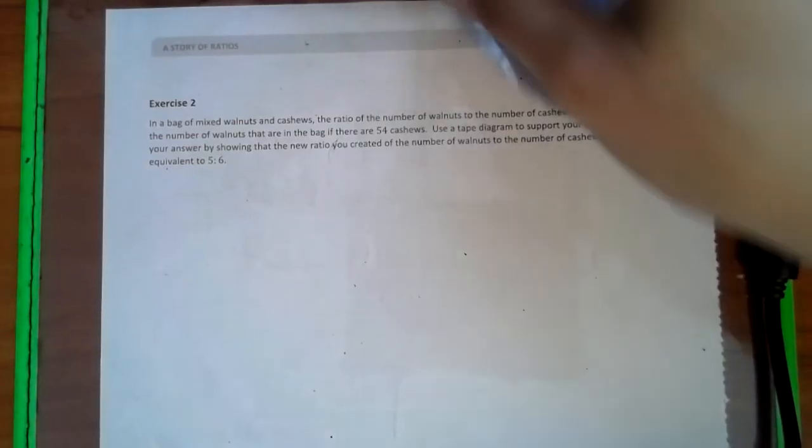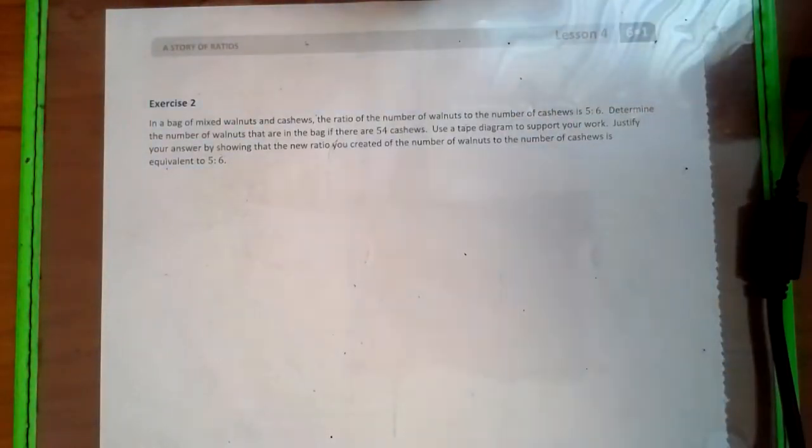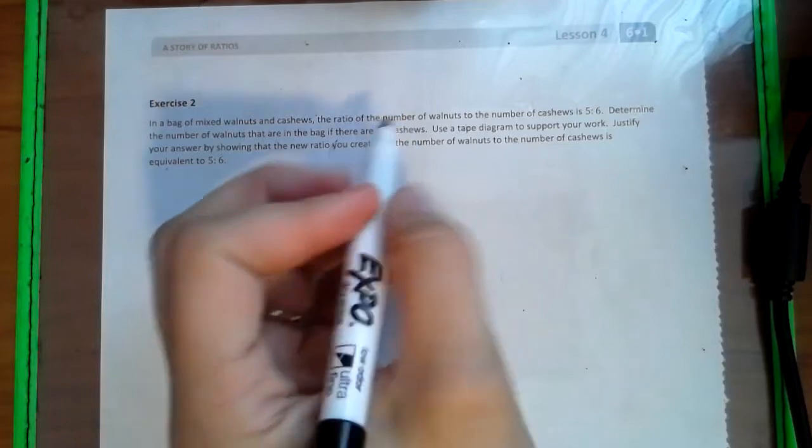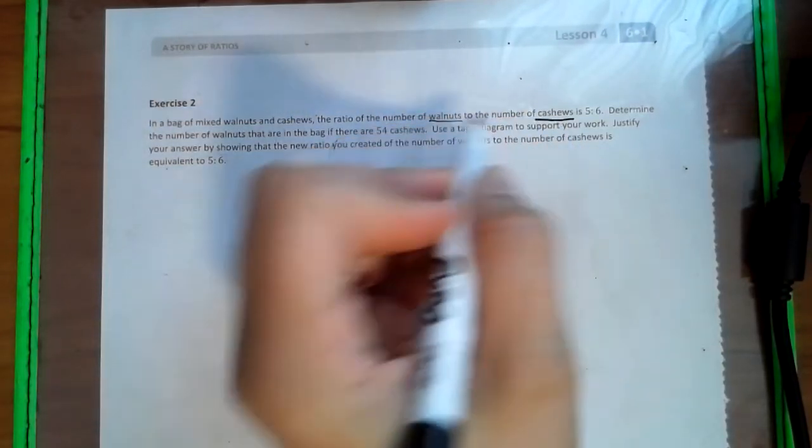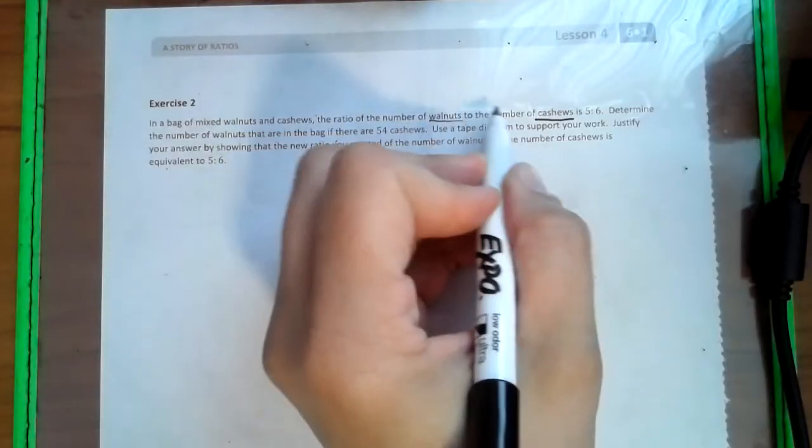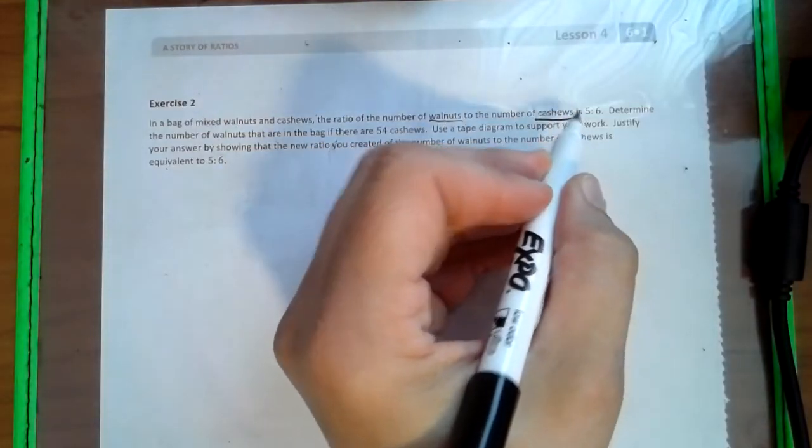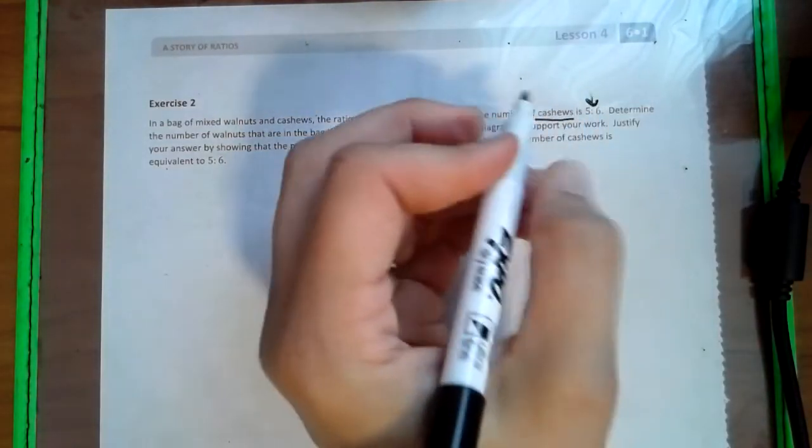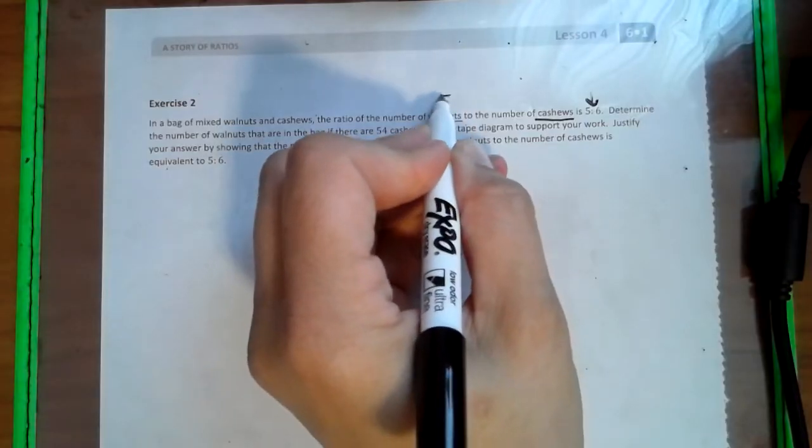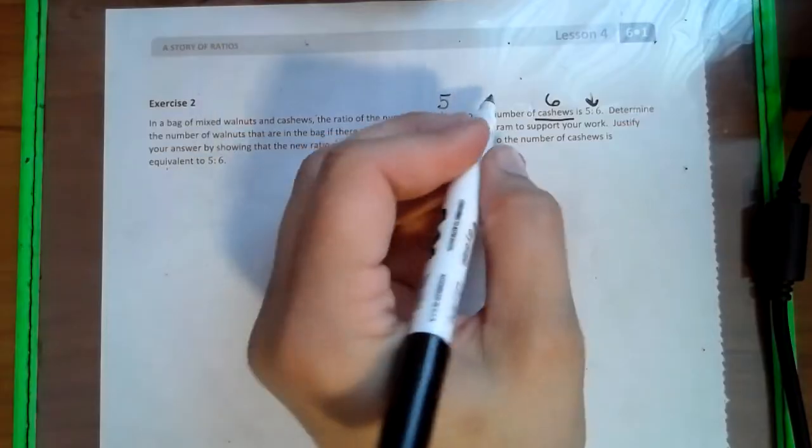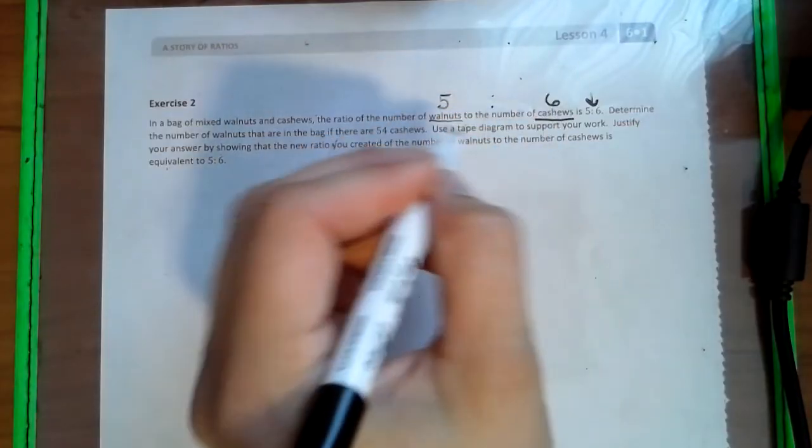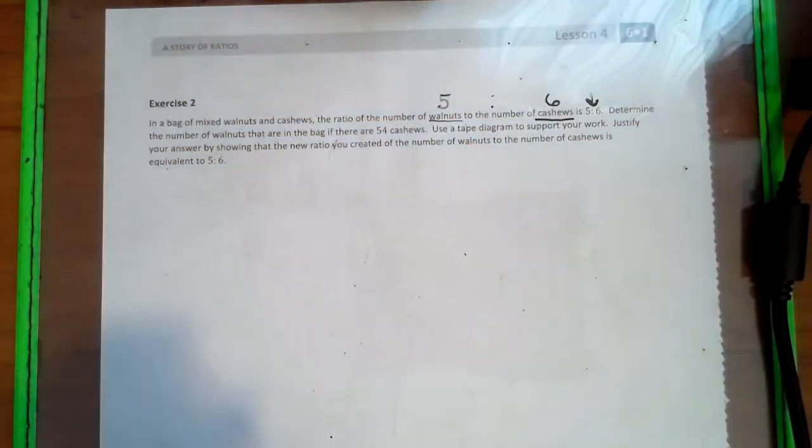Okay, so here we go. First things first, order matters. So walnuts to cashews. So walnuts comes first, cashews come second. So this 5 to 6 ratio right here means that walnuts represent the 5 and cashews represent the 6. Okay, so that's the first piece of information that is super, super important.